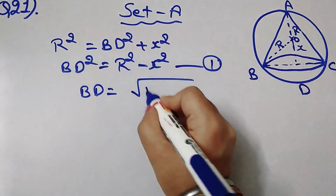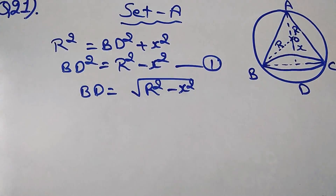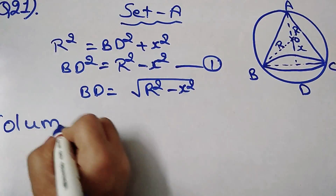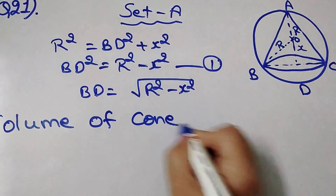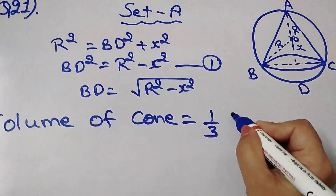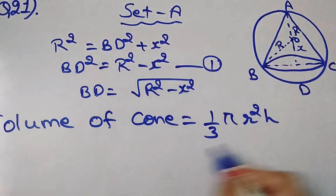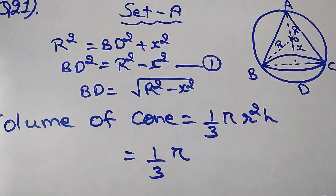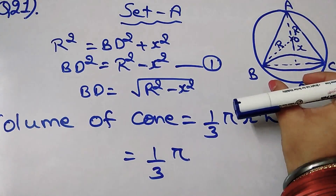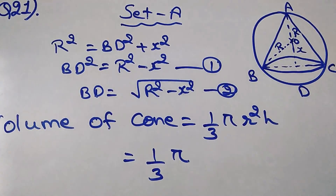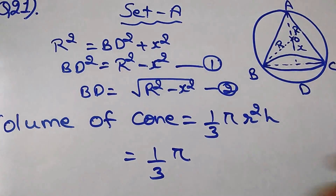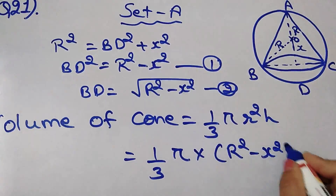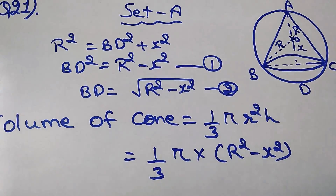Therefore BD is equal to the square root of R squared minus x squared. The volume of the cone is equal to (1/3)πr²h, where r is the base radius. Putting the value of BD, we substitute r = BD, so r squared equals R squared minus x squared.